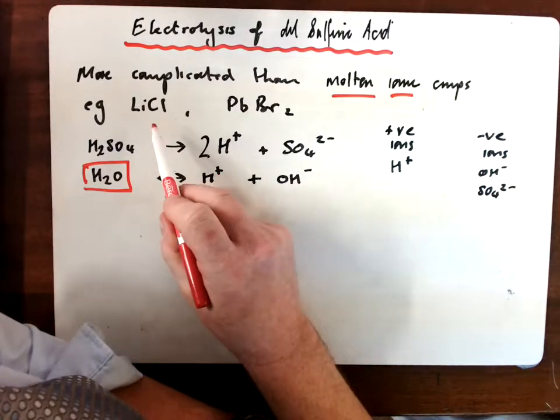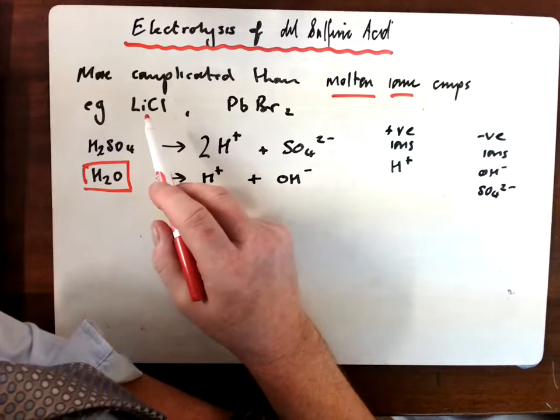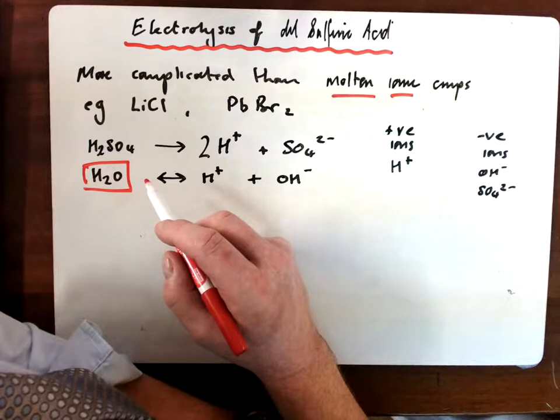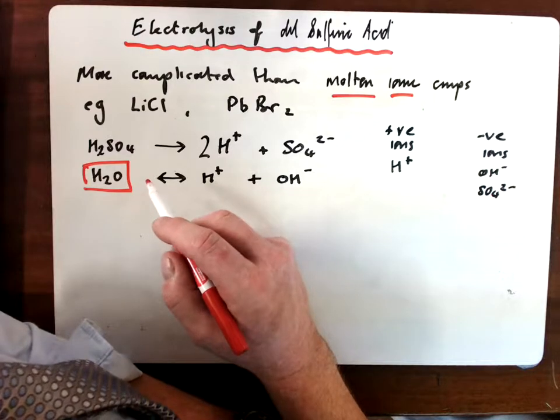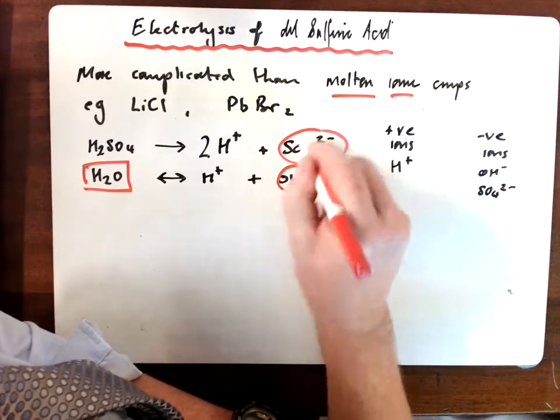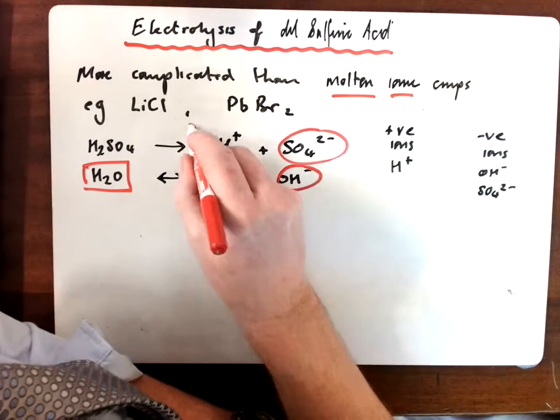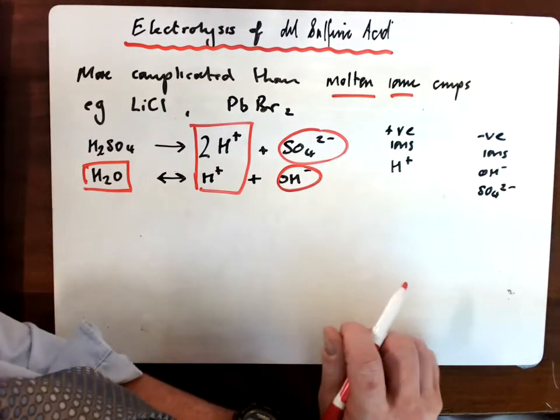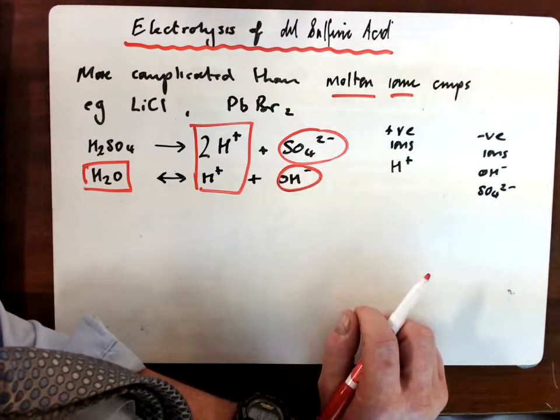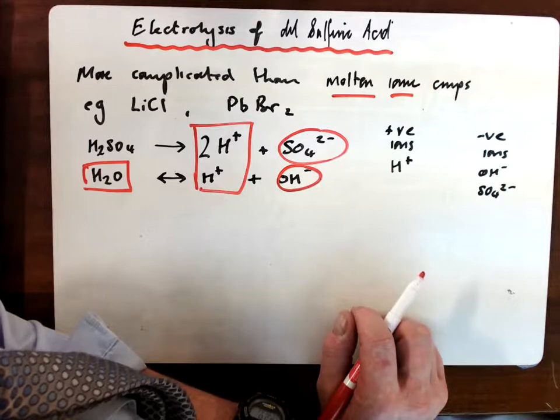Whereas in the molten ionic compounds we just had one positive ion and one negative ion, so it was really very easy to decide what was made at the cathode and what was made at the anode. Down here now, we've got two different types of negative ion and just one type of positive ion. So working out what's made at the cathode, or where the positive ions are discharged, is really very easy.